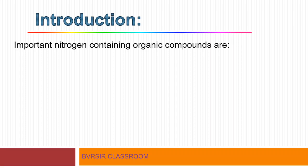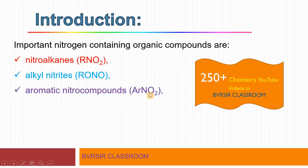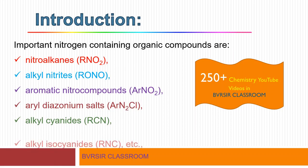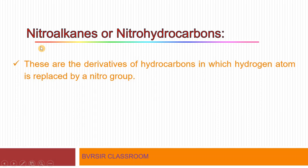First, I will give you an introduction regarding nitrogen-containing organic compounds. There are several important organic compounds which contain nitrogen as one of the elements, like nitroalkanes (general formula RNO2), alkyl nitrites (RONO), aromatic nitro compounds (ArNO2), aryl diazonium salts (ArN2Cl), alkyl cyanides (RCN), alkyl isocyanides (RNC), amides, urea, and similar compounds. In this class, our focus will be on nitroalkanes — that is, nitrohydrocarbons.